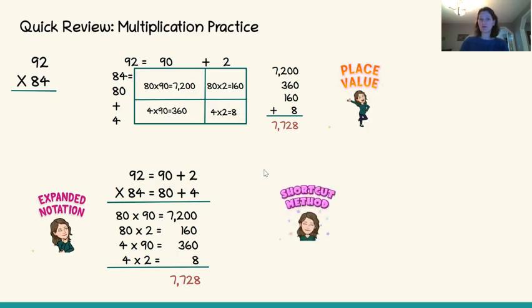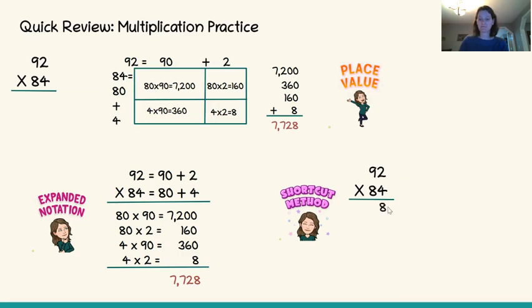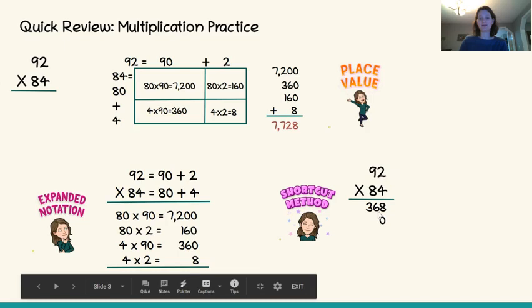We have also learned how to use the shortcut method to solve multiplication problems. For 92 times 84, we begin with the ones: 4 times 2 is 8, and we carry on with our 4 and say 4 times 9 is 36. This line records what we multiplied with the ones — what we multiplied with the 4 that's in the ones place. Now we're going to multiply by the 8, which is in the tens place.